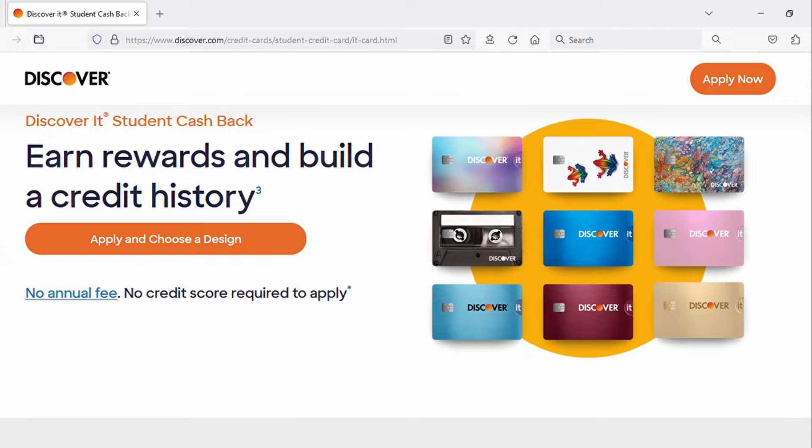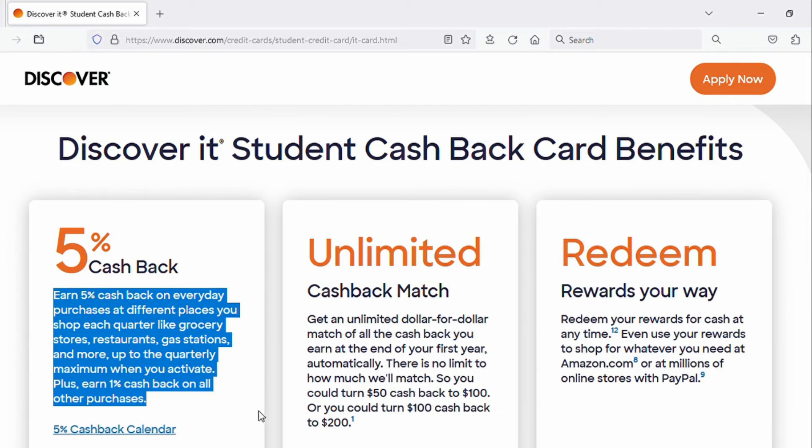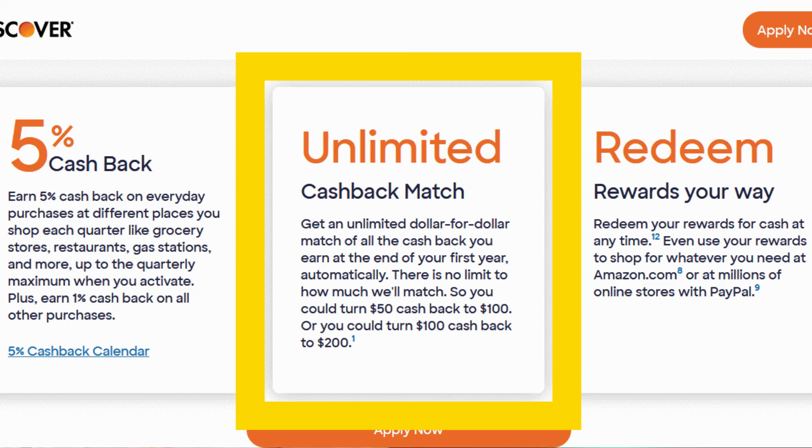And that Discover It card for students is a fine place to start as well. No annual fee, you get 5% cash back in certain purchasing categories that change each calendar quarter. So every three months you're gonna have different categories where they are giving 5% cash back. So you kind of have to stay on top of that if you want to maximize those rewards. Everything else that you purchase with the card will get you 1% cash back. At the end of the first year of having the card, they will double all those rewards that you earned in those 12 months prior. So that is a nice feature.